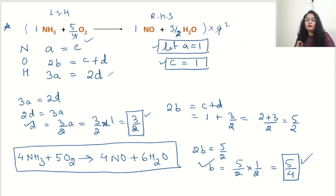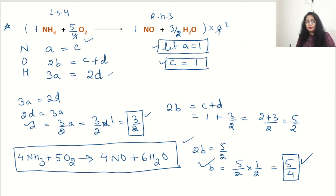This reaction is balanced — let's check. Nitrogen: 4 on left, 4 on right — balanced. Oxygen: 5×2 = 10 on left; 4 + 6 = 10 on right — balanced. Hydrogen: 3×4 = 12 on left; 6×2 = 12 on right — balanced. By using this method you will be 100% sure, unlike the hit and trial method. This will work every time.